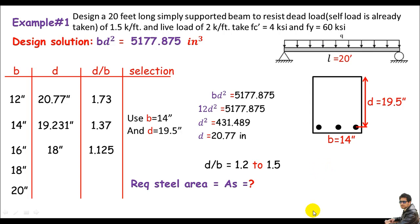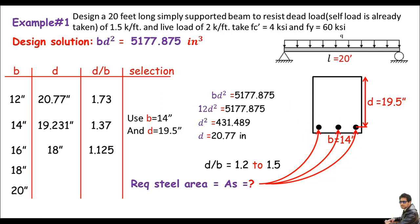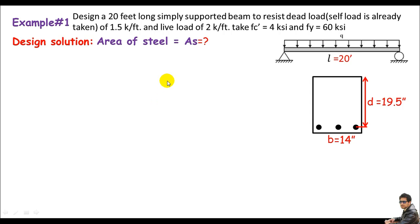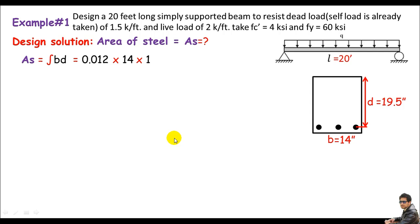Step five: required steel area As. Using the formula As = rho × b × d, with rho = 0.012, b = 14 inches, and d = 19.5 inches, we get As = 0.012 × 14 × 19.5 = 3.276 square inches. This is the total area that must be covered by the main longitudinal bars.